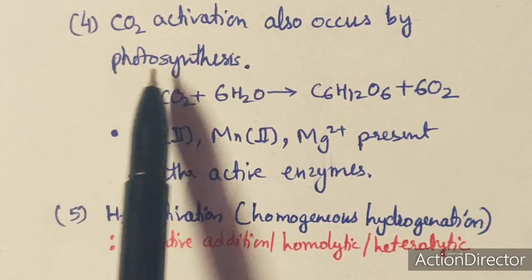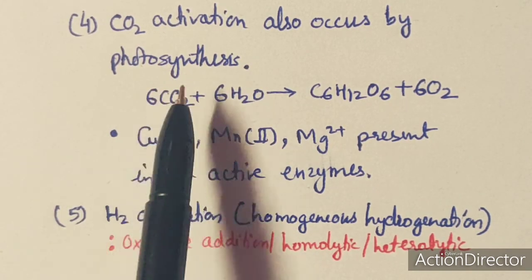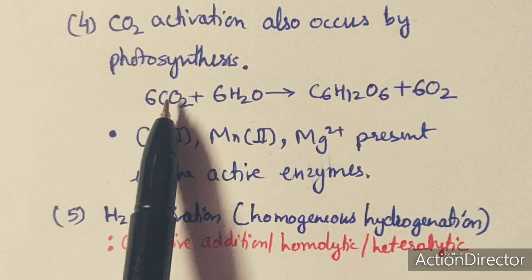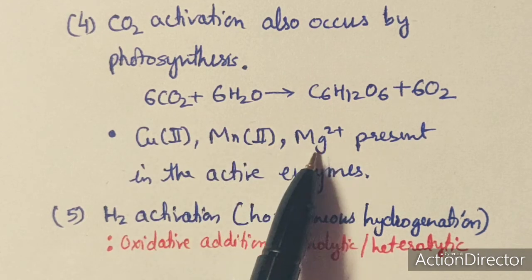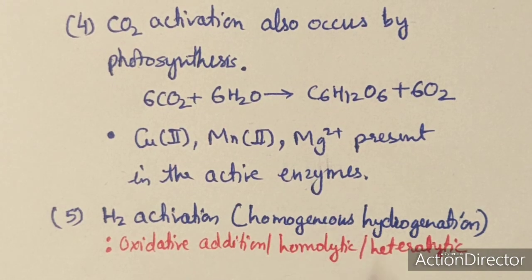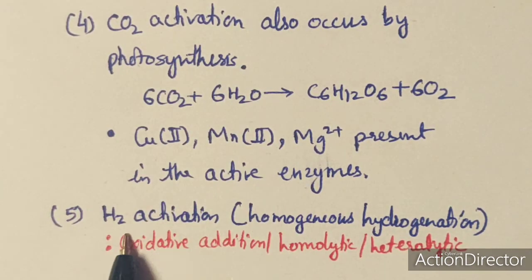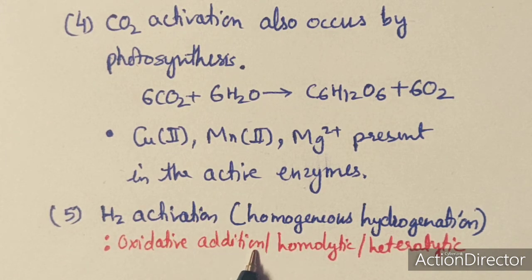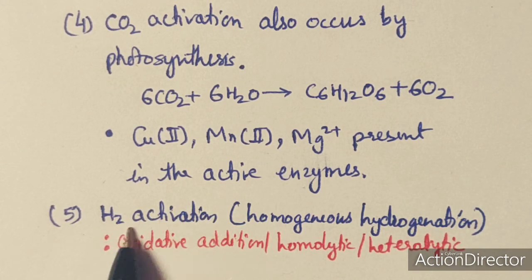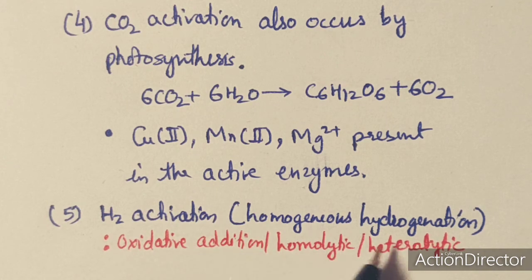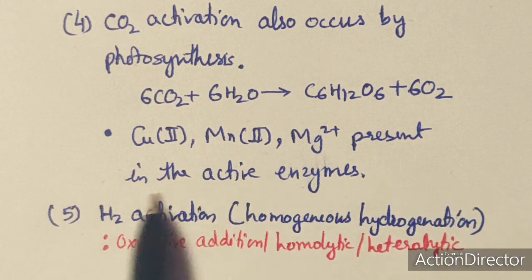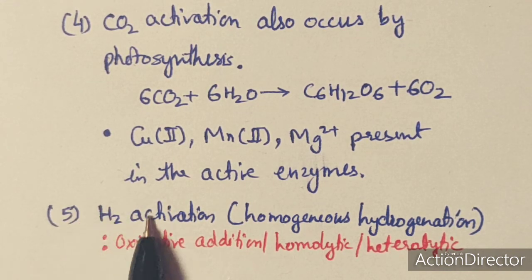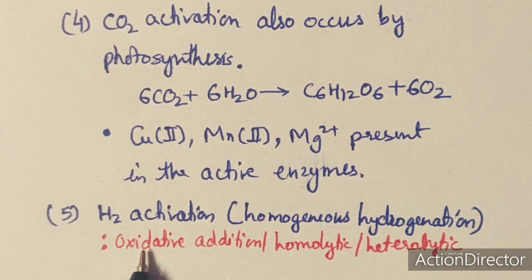CO2 activation can also occur by natural processes. In photosynthesis, CO2 and H2O react to form glucose and O2 — a natural CO2 activation occurring in the presence of copper, magnesium, and manganese-centered active enzymes. Additionally, H2 activation has already been discussed in detail under homogeneous hydrogenation, where H2 activation can occur via oxidative addition, homolytic, or heterolytic processes — and this should also be included as activation of small molecules by coordination.